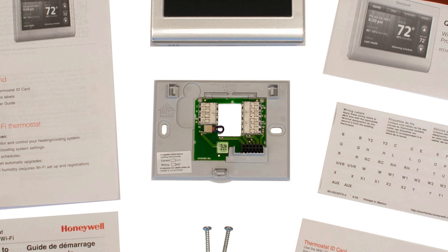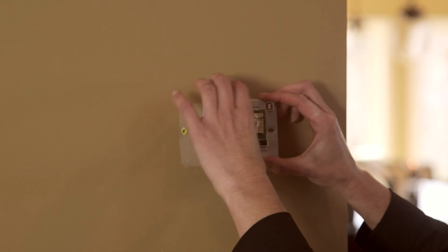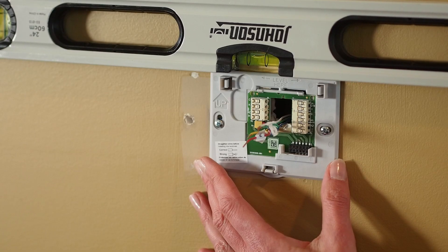Now you can mount the new wall plate. It's in the package next to the manuals. Set the thermostat aside for now. Position the wall plate so the wire hole is centered and pull the wires through. Make sure the plate is level.